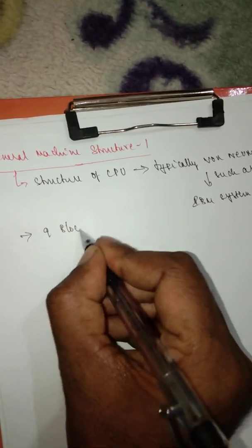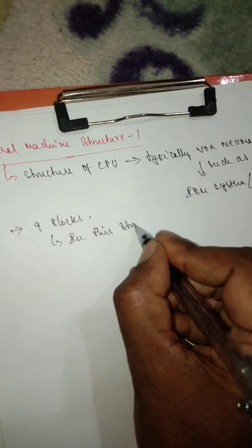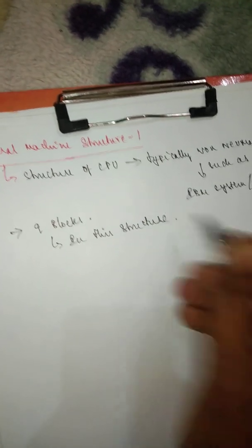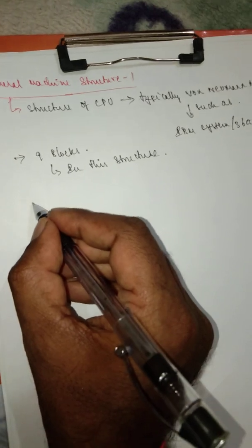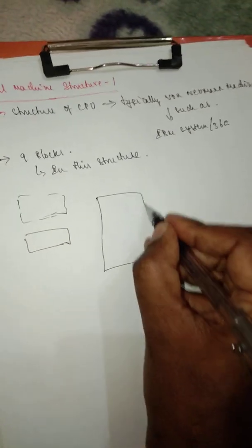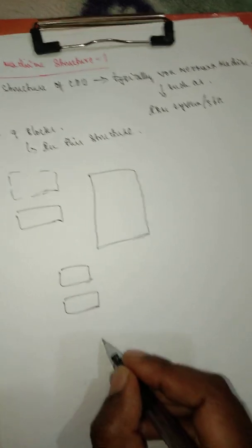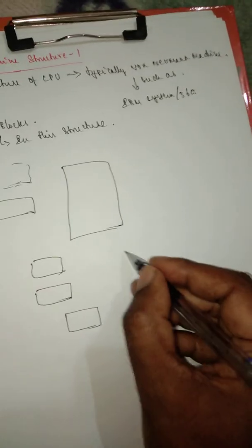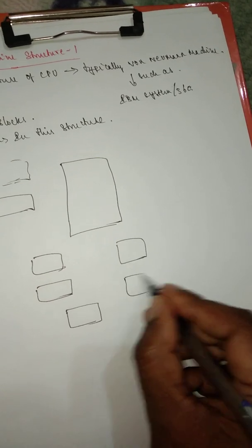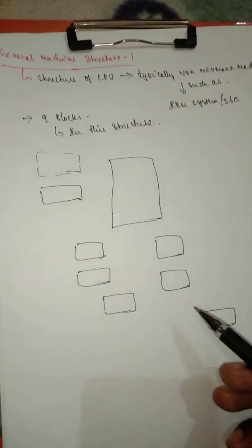This structure does consist of 9 blocks. In this structure we have the following blocks: initially we have two blocks, then a major big block, and several more. So totally you have 9 blocks.